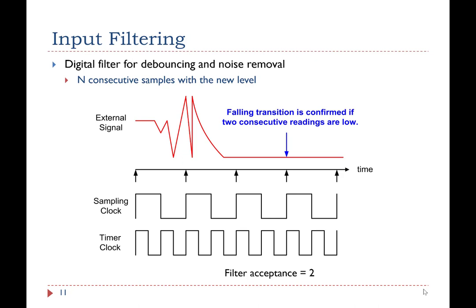The timer hardware may offer some advanced functionalities. For example, for debouncing and noise removal, the timer may include a programmable digital filter. This figure shows an example of how a signal is filtered when the filter acceptance is 2. A falling transition is confirmed only if two consecutive readings of the external signal are low.